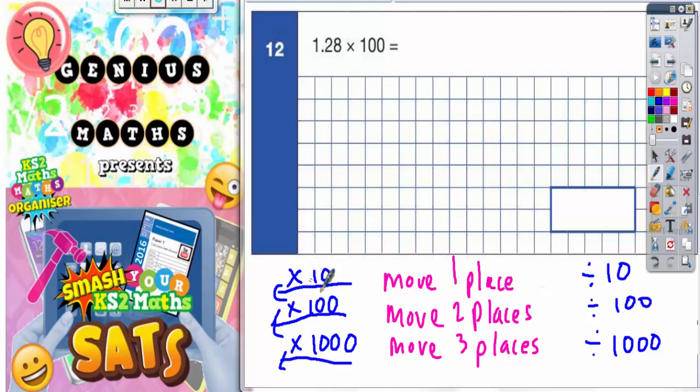Multiply by 100, move the digits two places to the left. Multiply by 1000, move the digits three places to the left. If you're dividing, your number is going to get smaller.